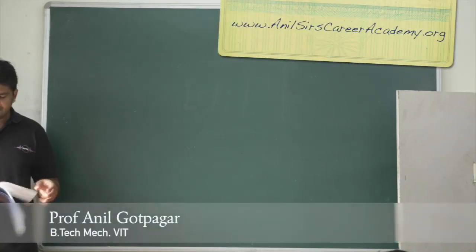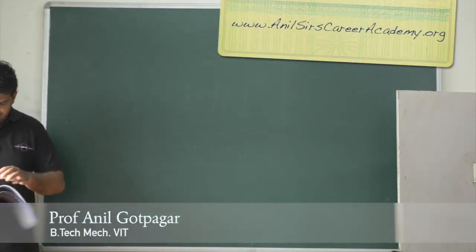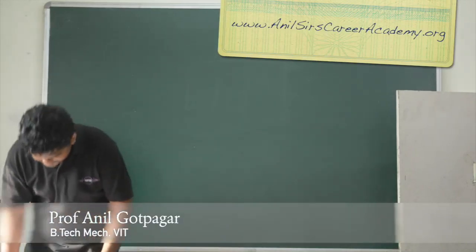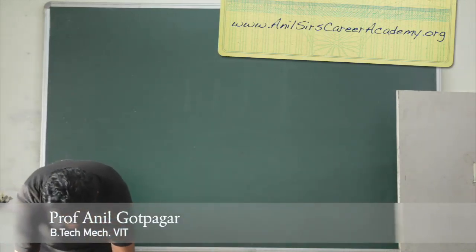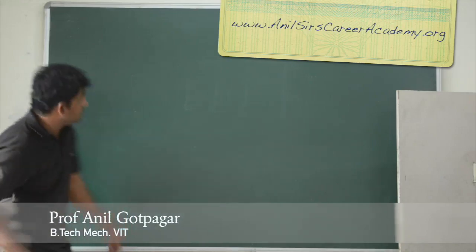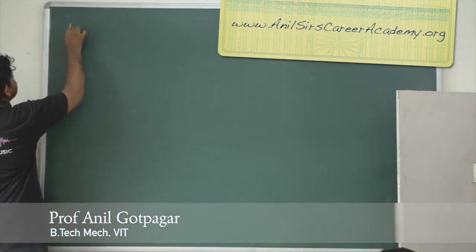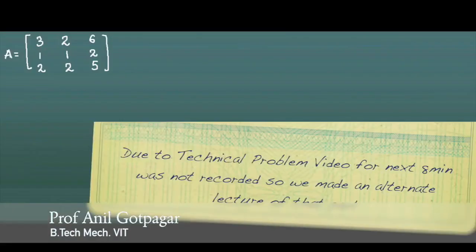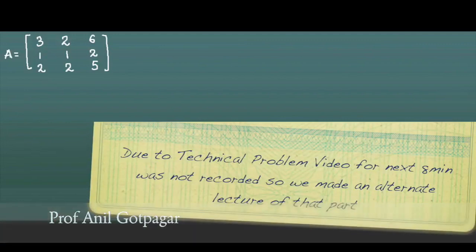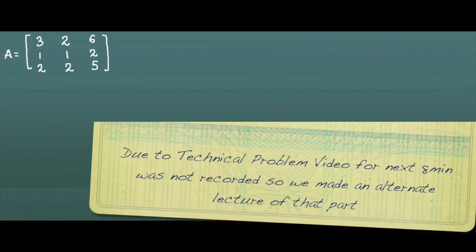We will convert a given matrix into its inverse using the adjoint method. For example, given matrix A, the first step is to find the determinant of A.